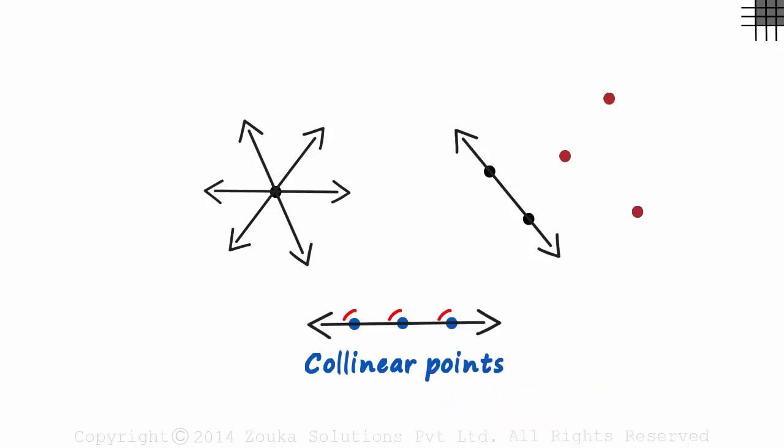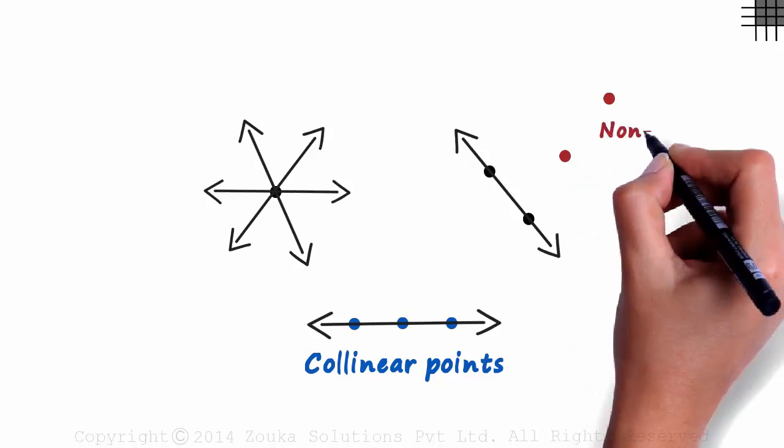Remember, three points are collinear if exactly one line passes through each of them. Then what are these three points called? Simple! They are called non-collinear points.